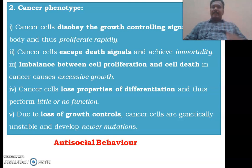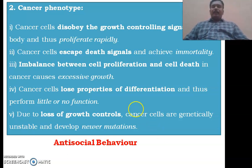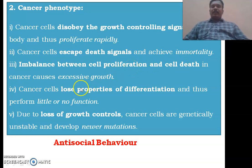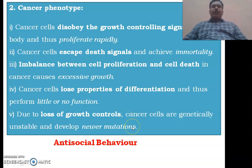The next characteristic is cancer phenotype. Generally, these cancer cells will have antisocial behavior — their behavior is not similar to that of normal cells in the body. They will disobey growth control signals and proliferate rapidly. They will escape death signals — normally cells die by necrosis or apoptosis through intracellular or extracellular signals — but cancer cells escape those death signals, achieve immortality, and show an imbalance between proliferation and cell death. They lose the property of differentiation and perform very little function. Due to loss of growth controls, cancer cells are genetically unstable and develop newer mutations.